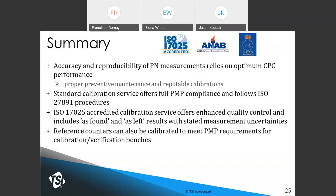Regarding the normalized plateau correction in the slides: the normalization brings counting efficiency to exactly 100% at the plateau, but CPCs are not perfect. Counting efficiency at the flat part of the curve is close to 100% but typically 97–98%. The normalized efficiency curve is not actually used in calculations; the actual calibration curve for the reference CPC is used.